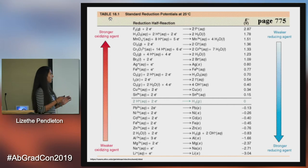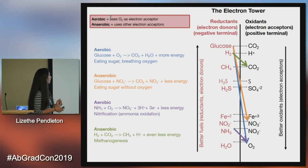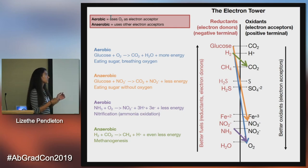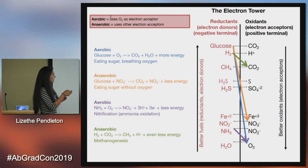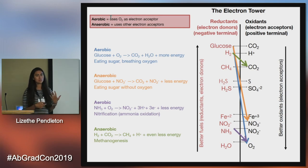The key takeaway here is that the more positive a value, the stronger the oxidizing agent, and at the same time, the weaker the reducing agent. Where there's a higher negative value, it's a stronger reducing agent and a weaker oxidizing agent. This is the electron tower — the better reductants, or electron donors, are at the top, and the better electron acceptors are at the bottom. The longer the arrow, the more energy is obtained. So glucose to oxygen — from the top to the bottom — has a ton of energy to be gained, whereas hydrogen gas to carbon dioxide doesn't yield a significant amount.